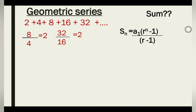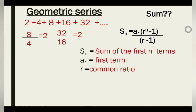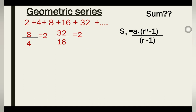Let's explain the parameters: S_n stands for the sum of the first n terms. If it's the sum of the first 20 terms, it becomes S₂₀; for 10 terms, S₁₀. Here our first term a₁ is 2, and our common ratio r is also 2. Let's find the sum of the first five terms, so S_n becomes S₅.